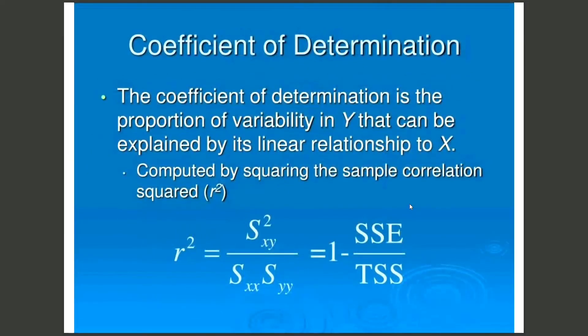Coefficient of determination: The coefficient of determination is the proportion of variability in Y that can be explained by its linear relationship to X. It is computed by squaring the sample correlation coefficient, that is R squared equals S squared XY divided by S double X times S double Y, which equals 1 minus SSE divided by TSS.